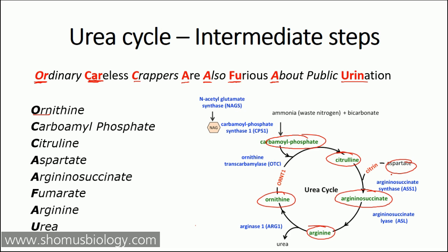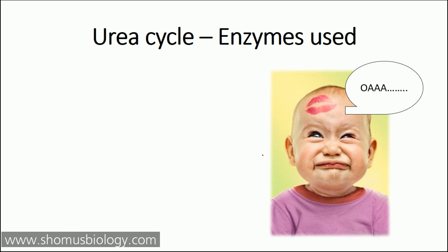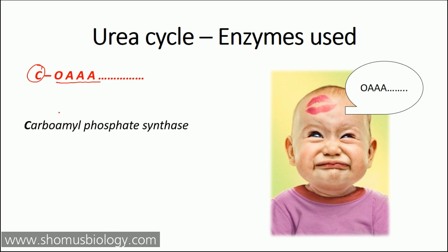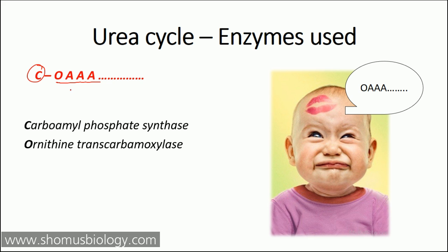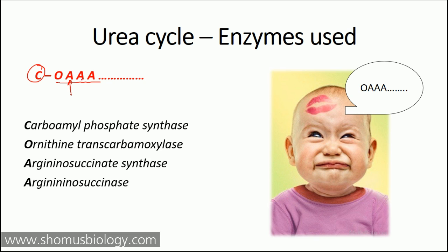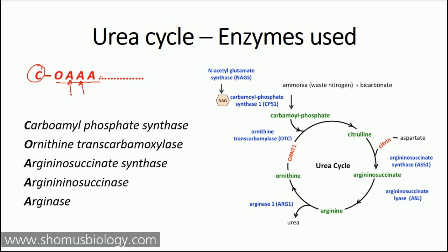Now let's look at the enzymes. To understand the enzymes used in the urea cycle, you need to know only one simple thing — a baby crying: 'OAA.' It's disgusting but it keeps happening. Simply remember OAA and start with C. So: C for carbamoyl phosphate synthase, O for ornithine transcarbamoylase, then the first A for arginino succinate synthase, another A for arginino succinase (or arginino succinate lyase), and the last A for argininase.